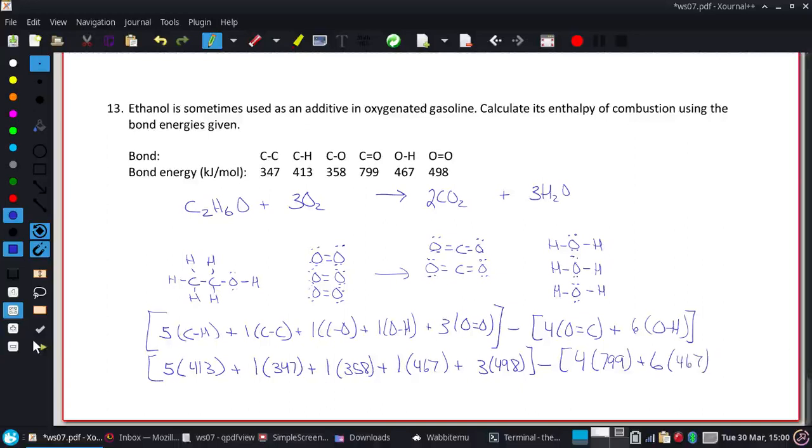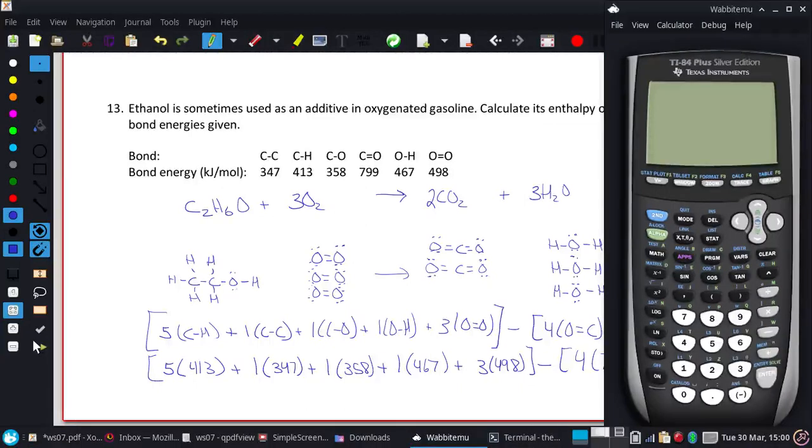Now technically, had you caught it, that six OH bonds is actually only five, because that's kind of implying we don't really need to break an OH bond, we already had one. But I'm going to pretend like I missed it and let the calculator do all that work for me.